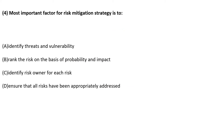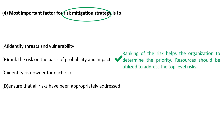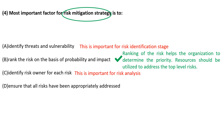Most important factor for mitigation of risk is the risk mitigation strategy — that is, what kind of control to implement and which risk to address first. In such cases, it is important to rank the risk first. Ranking helps the organization determine priority, and resources should be utilized to address top-level risks. Threats and vulnerabilities are more important from a risk identification perspective rather than mitigation. Risk owner identification is more relevant during risk analysis. It is not practical to address all risks.